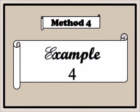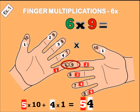Example four: you put the little finger and the pointing finger together. Count down — one, two, three, four, five — five times ten is fifty. On the left hand we have four, on the right hand we have one — four times one is four. Fifty plus four is fifty-four. Six times nine equals fifty-four.